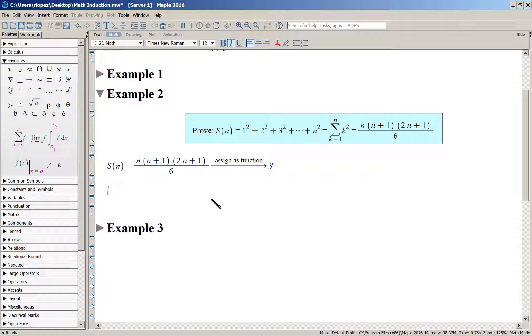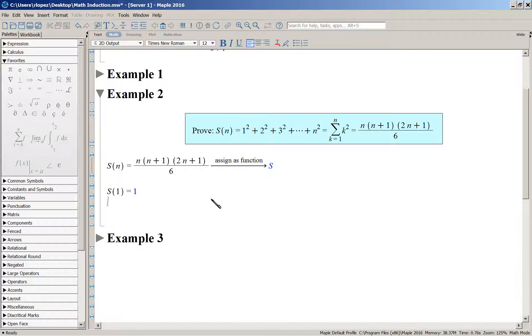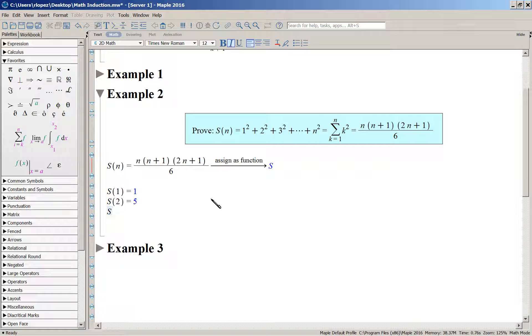Well, what about S of one? First term, one squared is one. What about S of two? That's one squared plus two squared. That's one plus four. That should be five. And if you want to do one more, what about S of three? Well, you already got five, and you would be adding three squared to be nine. So you'd be adding five and nine. You should get 14. And you do.